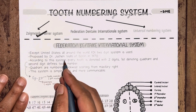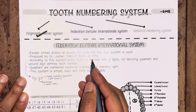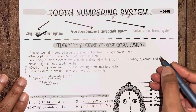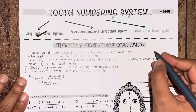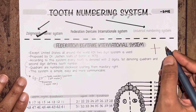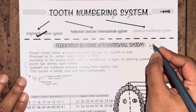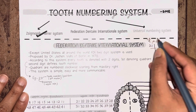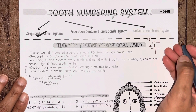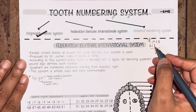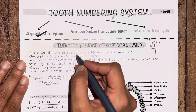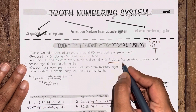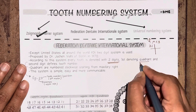This system was proposed by Dr. Joshan Will of Berlin in 1970. According to this system, there are two digits. Earlier in Zsigmondy-Palmer we have seen a quadrant system with only a single digit — for example, central incisor or lateral incisor on the right or left side. But for FDI, it is a two-digit system.